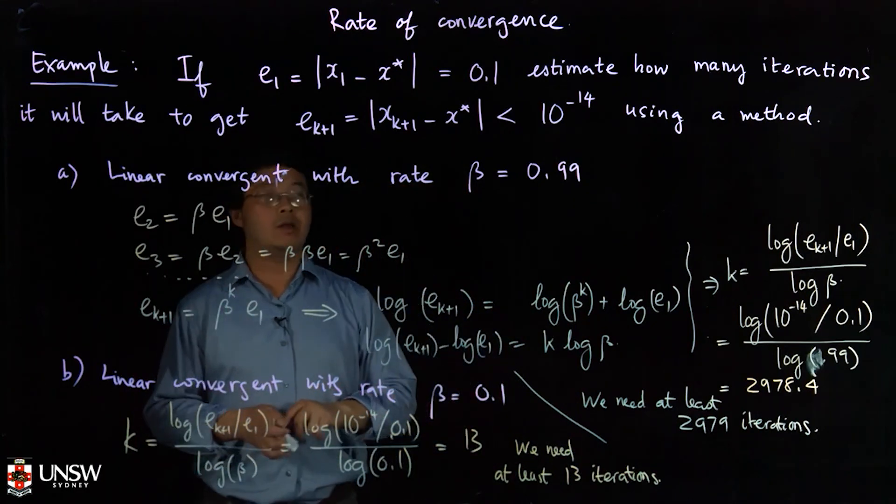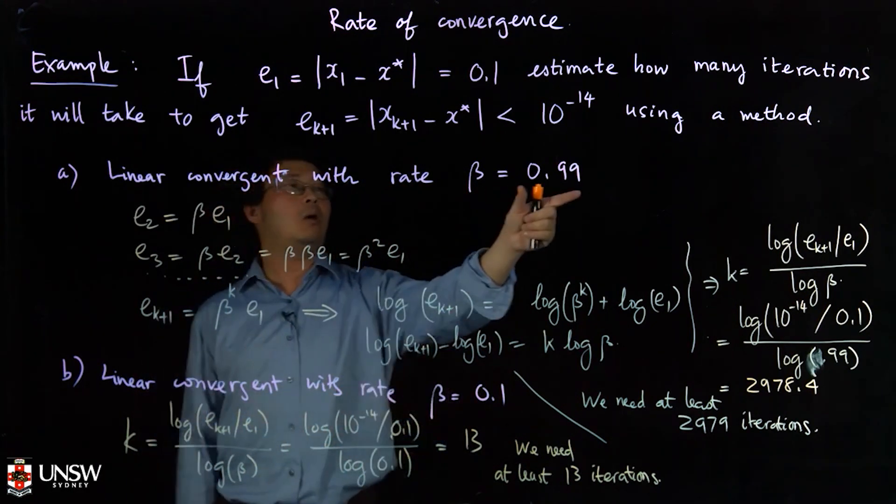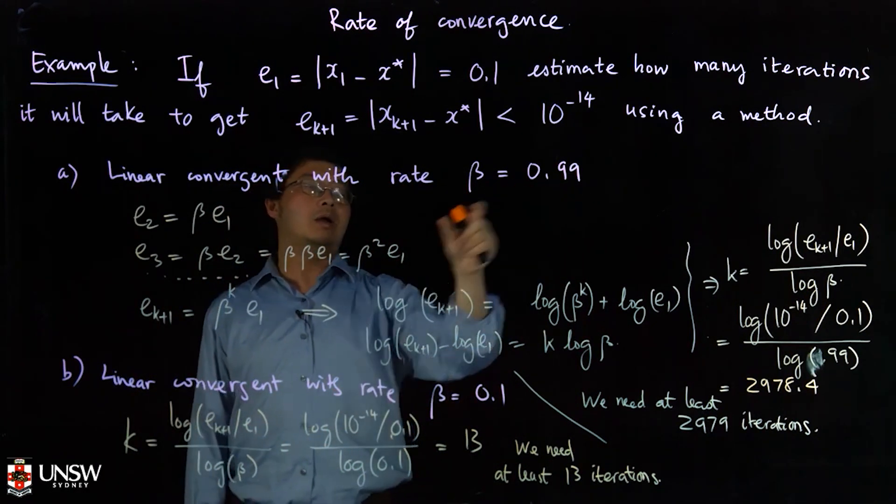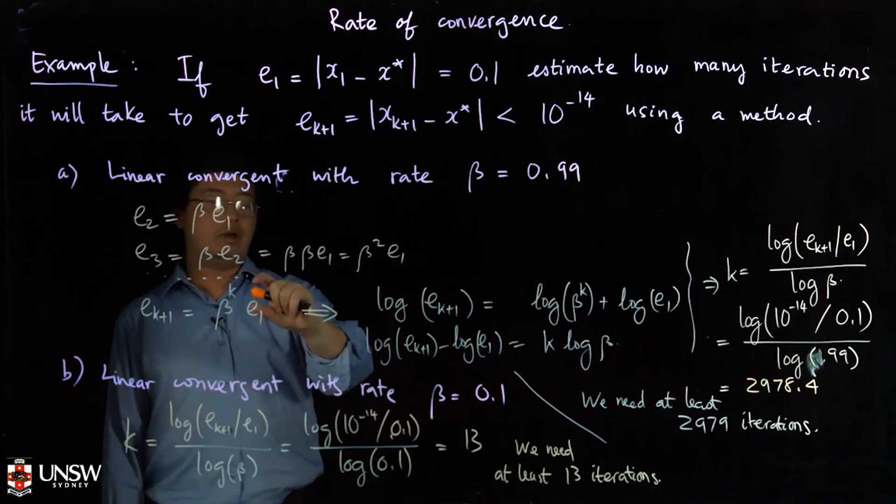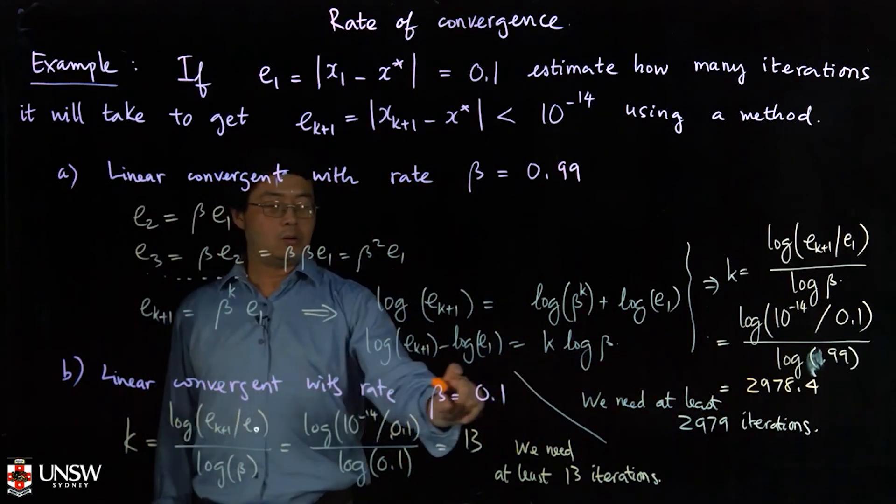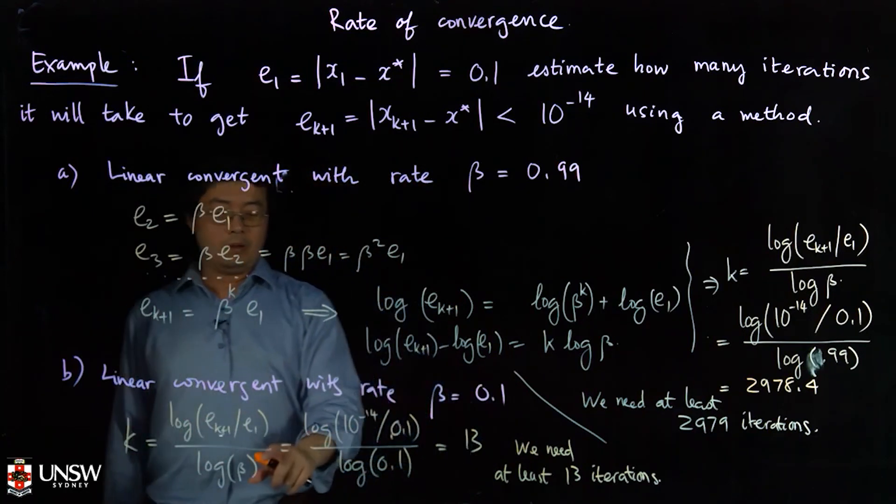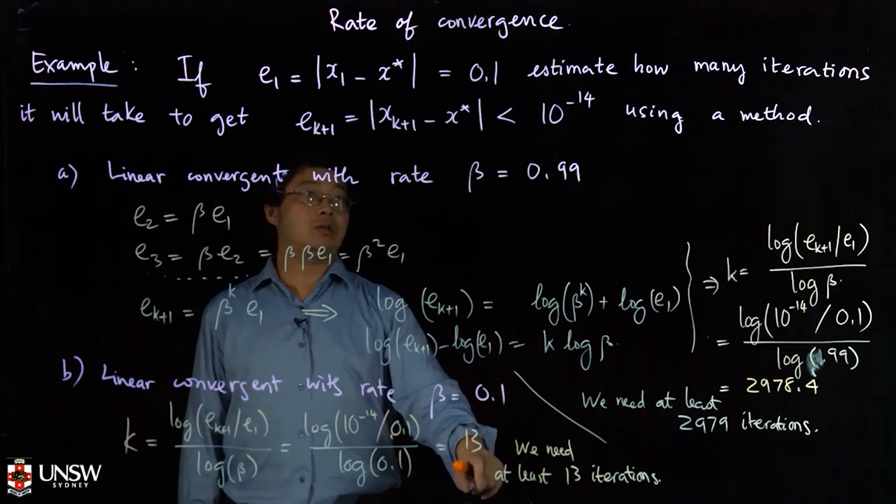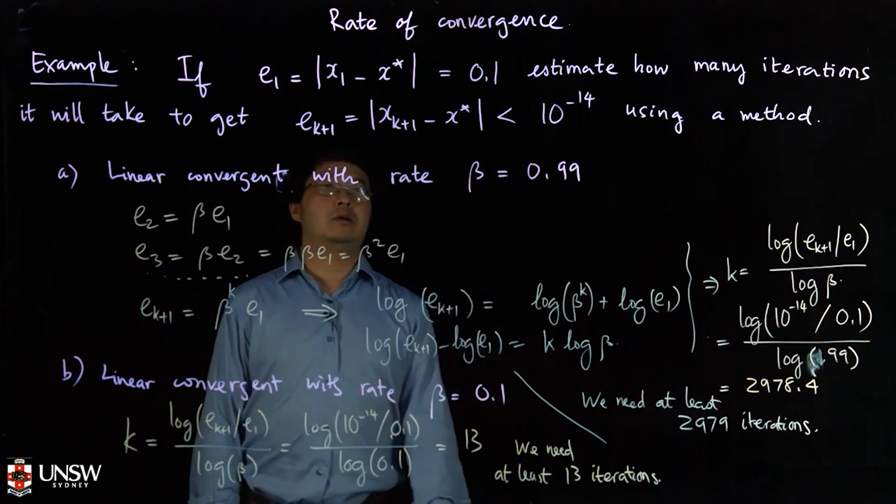And you see the difference here. When beta is close to one, the error decreases very little and you have to have more iterations than when beta is close to zero. When beta is close to zero, it takes fewer iterations to get to the required error.